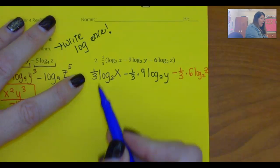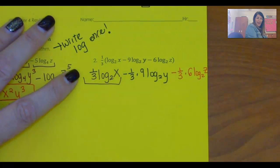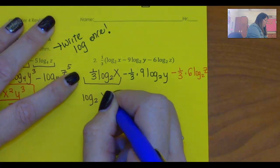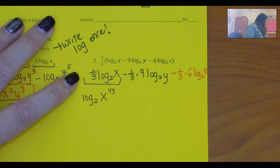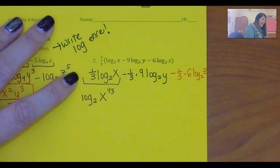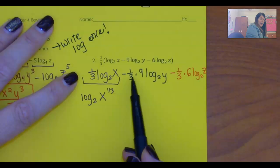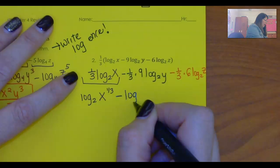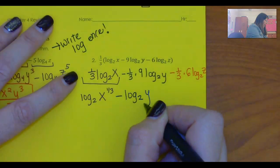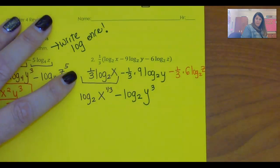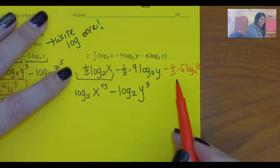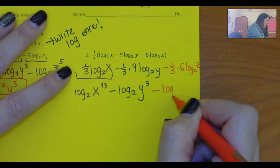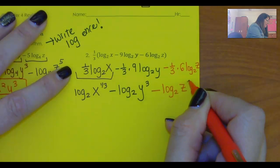So let's look at each of these. Now I've got this part, and I can bring that up as an exponent, that coefficient. Log base 2 of x to the 1/3, right? Now 1/3 times 9 is 3, right? So minus log base 2 of y cubed. 1/3 of 6 is 2, so that's like minus 2. So minus log base 2 of z squared.